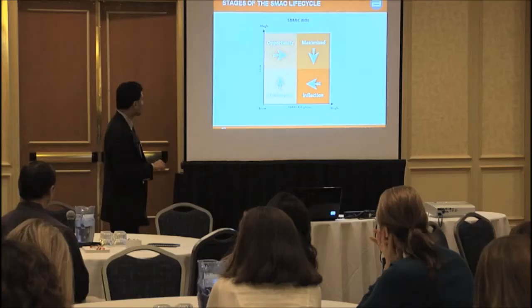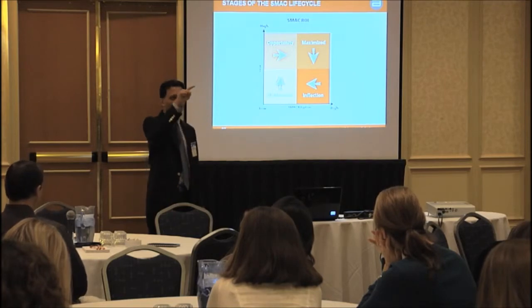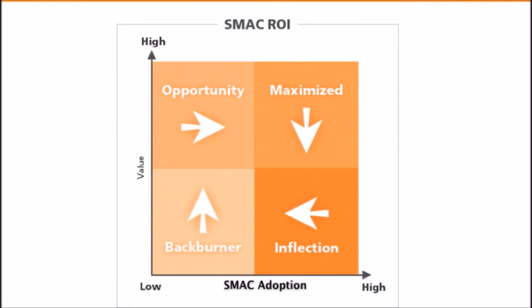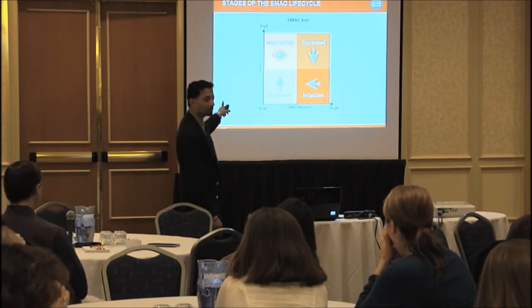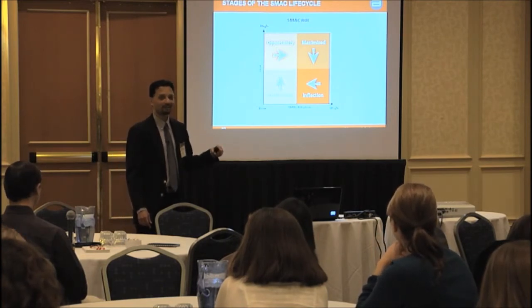Organizations go through a cycle — you might start in the back burner quadrant, move to opportunity, then maximize. But what's happened to Netflix? A lot of competition has followed their model, so they're reshaping their business by creating original programming like House of Cards and Orange Is the New Black to cycle back to maximize. The key takeaway: you won't stay in any quadrant for long, and if you don't adapt, everything will drive you back to the back burner.